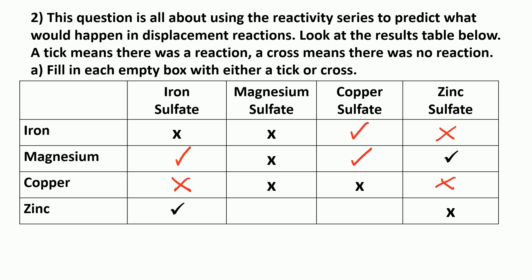And then the bottom row, zinc is less reactive than magnesium, so there would be no reaction there as zinc can't displace magnesium. And zinc is more reactive than copper, so zinc can displace copper and therefore there would be a reaction.